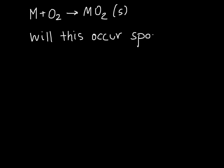So let's say that we have metals which oxidize in a reaction that looks like this. So we have a metal plus oxygen gas forming a metal oxide. And we want to know, will this be spontaneous? Will it occur spontaneously?